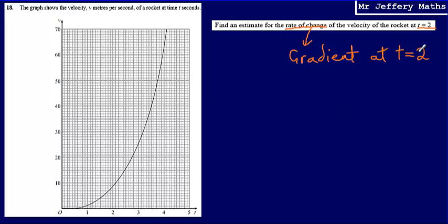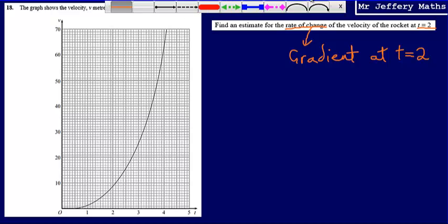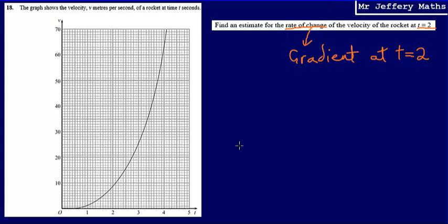Now, the problem with trying to figure out what the gradient is at t equals 2 is if we think about our curve, the gradient of this curve is constantly changing. The steepness is different at different points. It's not a straight line where the gradient is constant. So in order to figure out what our gradient is going to be, what we're going to do is draw a tangent at t equals 2.